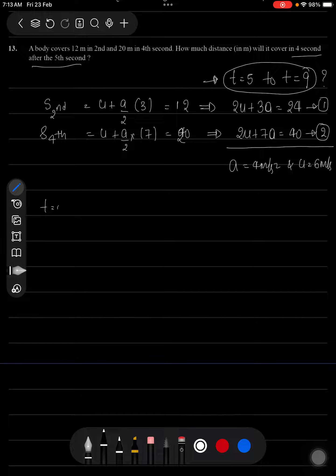So from t equals 0 to t equals 9 the distance traveled will be equal to u into 9 plus half into a into 9 square.